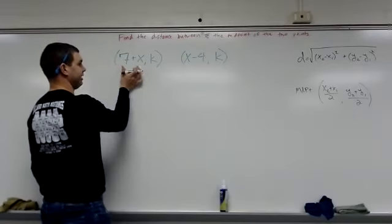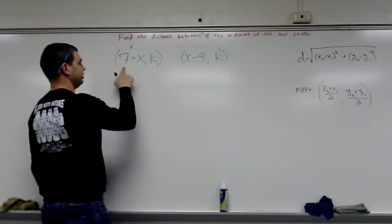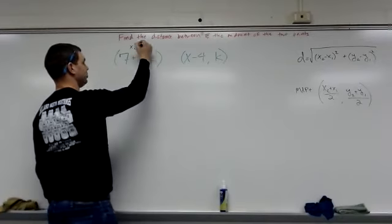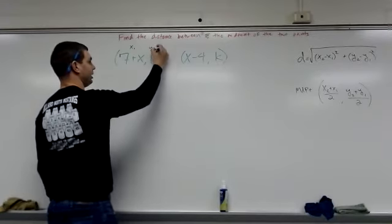This is the point for the x value, 7 minus x, and for the y value, k. I'm gonna call this x1, my y value, y1.